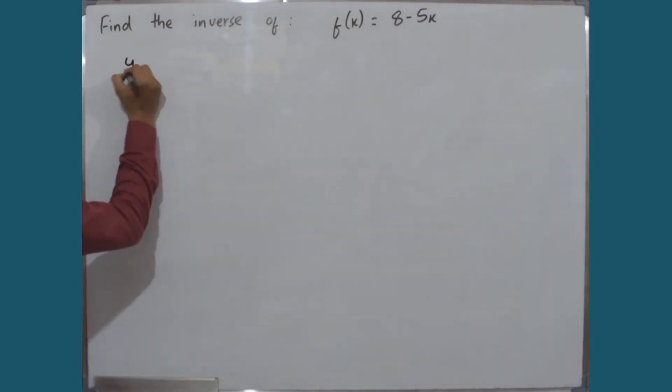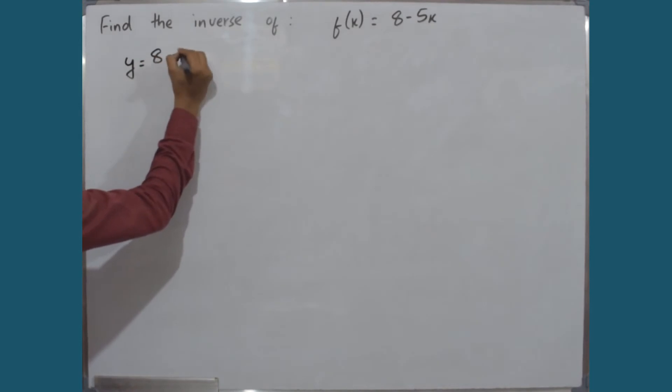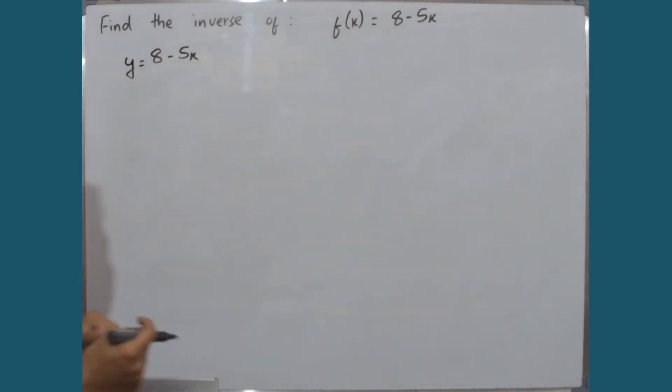To check this, let's write y is equal to 8 minus 5x. Now, if we put different values of x, we will get different values of y.